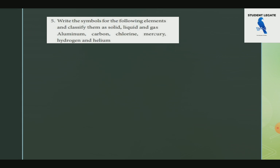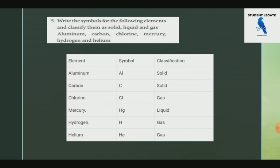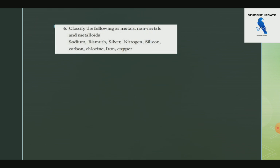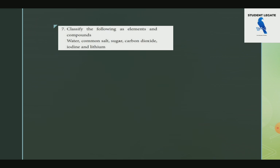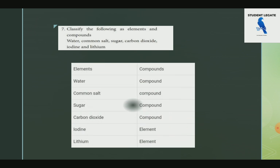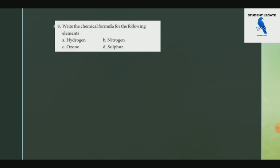Classify the following as gas, liquid, or element: Aluminum, Carbon, Chloride, Mercury, Hydrogen, Helium. Classify the following as metals, non-metals, or metalloids: Sodium - metal, Bismuth - metal, Silver - metal, Nitrogen - non-metal, Silicon - metalloid, Carbon - non-metal, Chloride - non-metal, Iron - metal, Copper - metal. Classify the following as element or compound: Water, Salt, Sugar, Carbon, Iodine, Lithium.